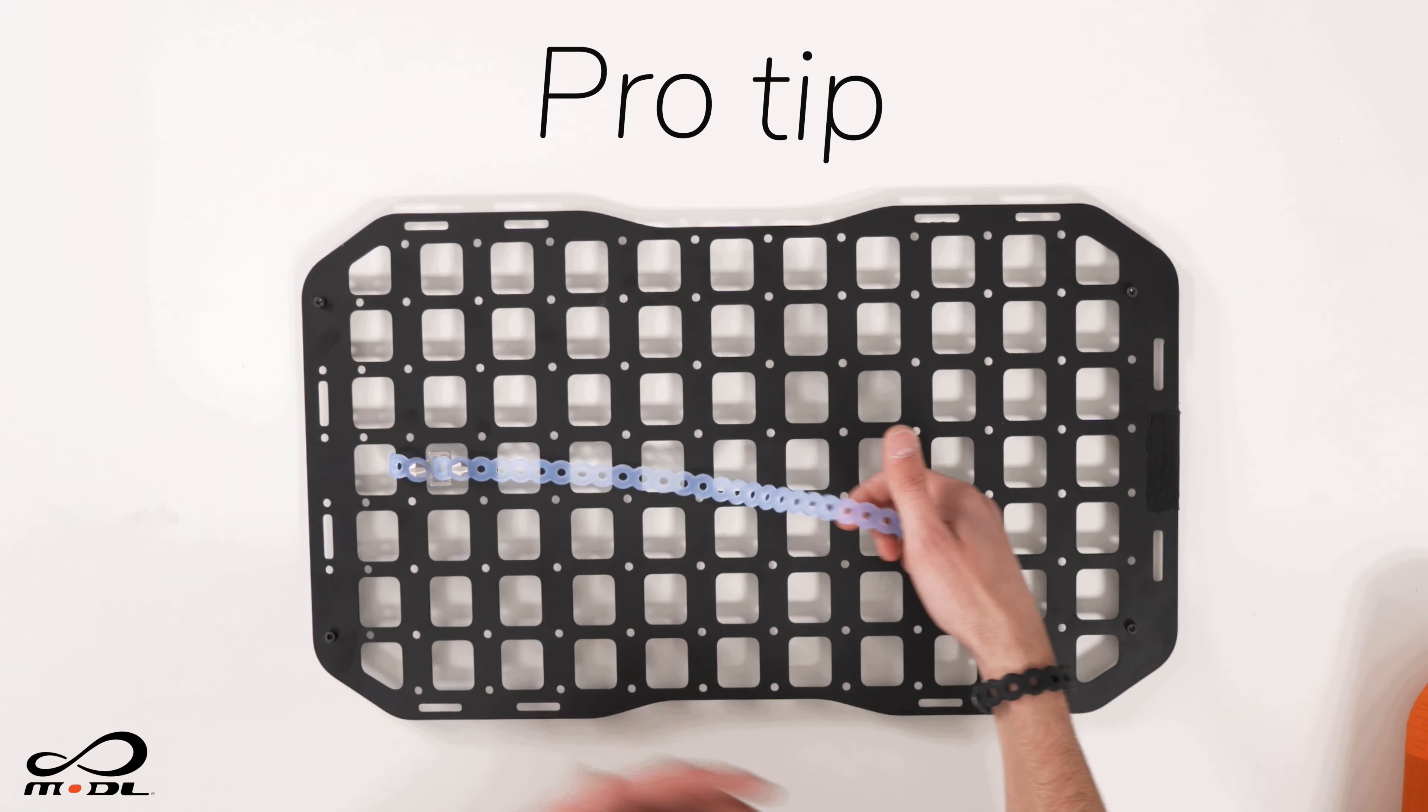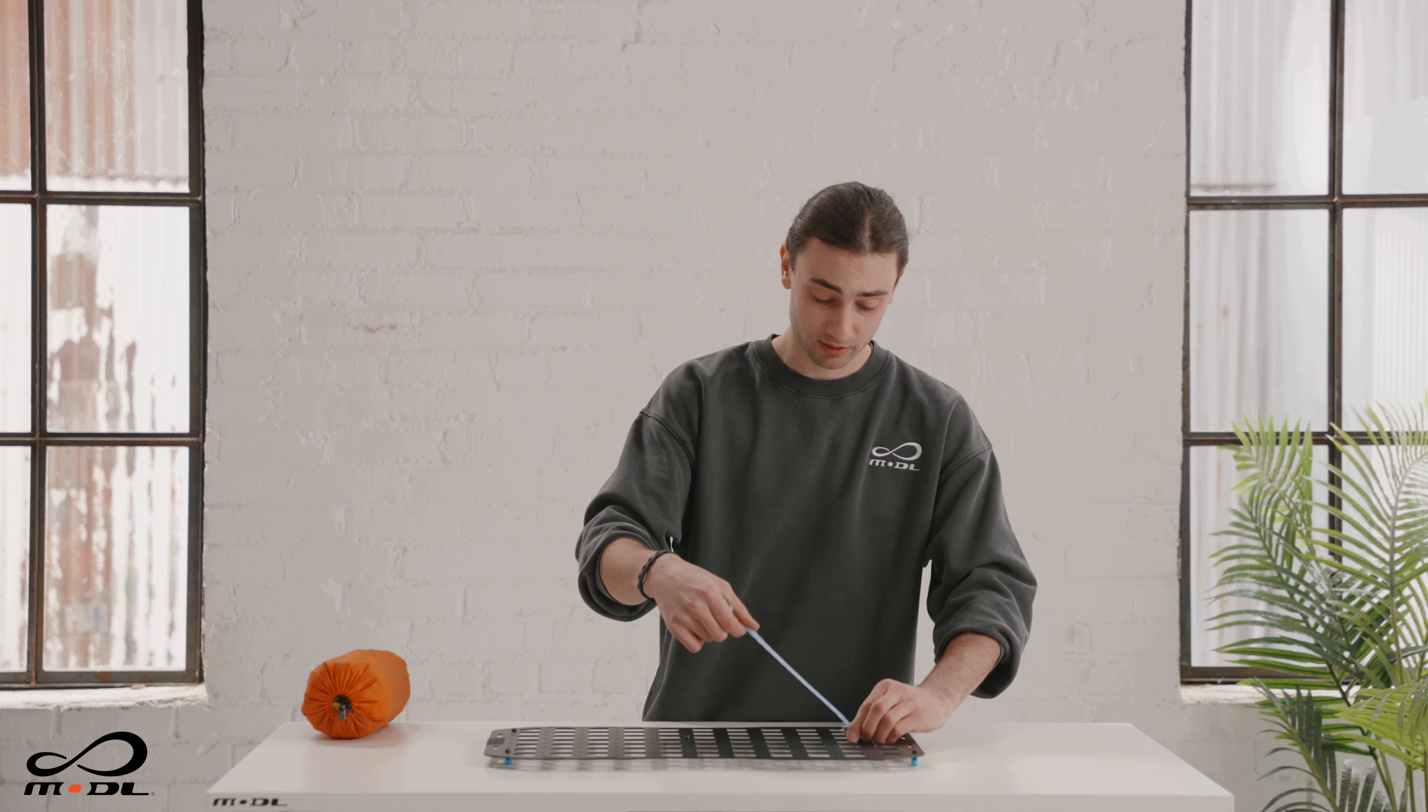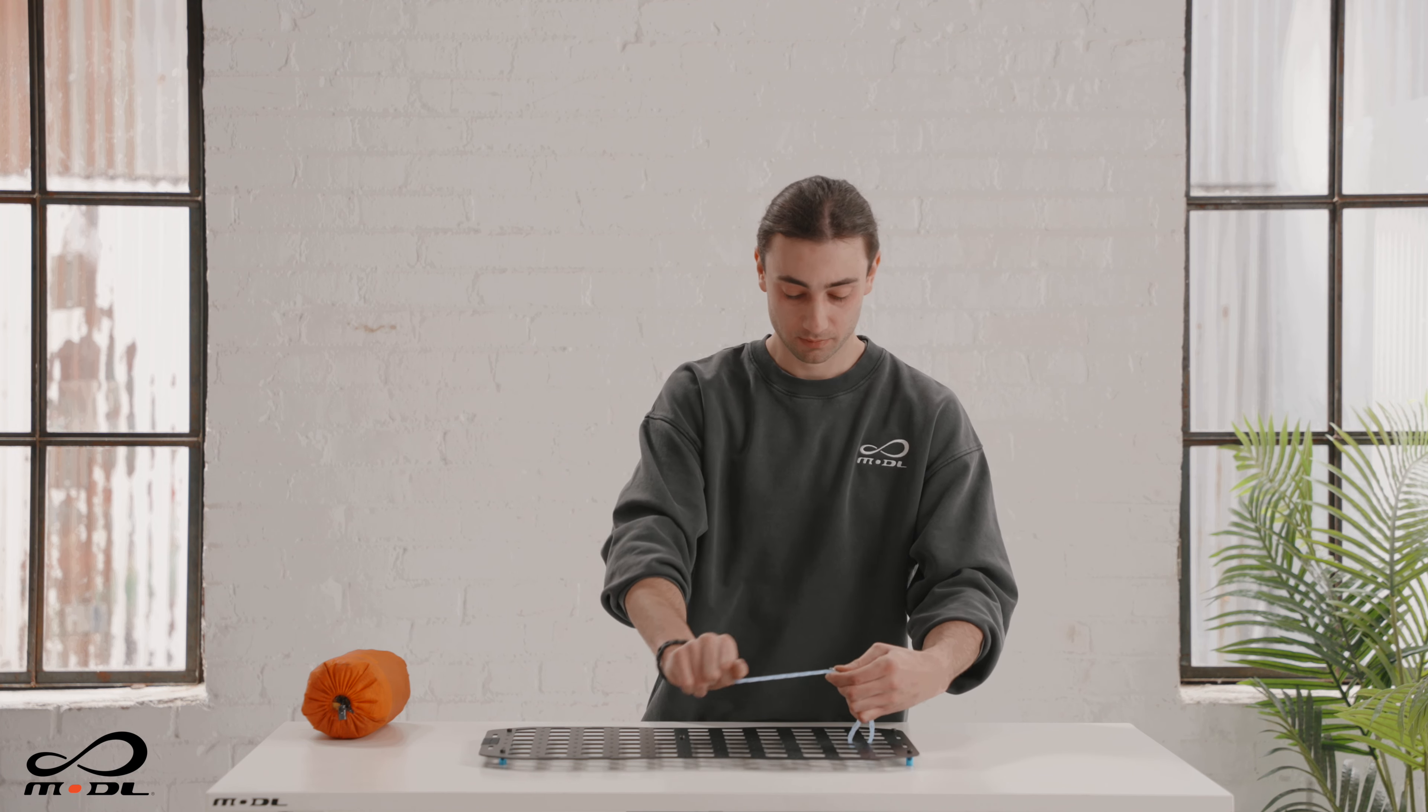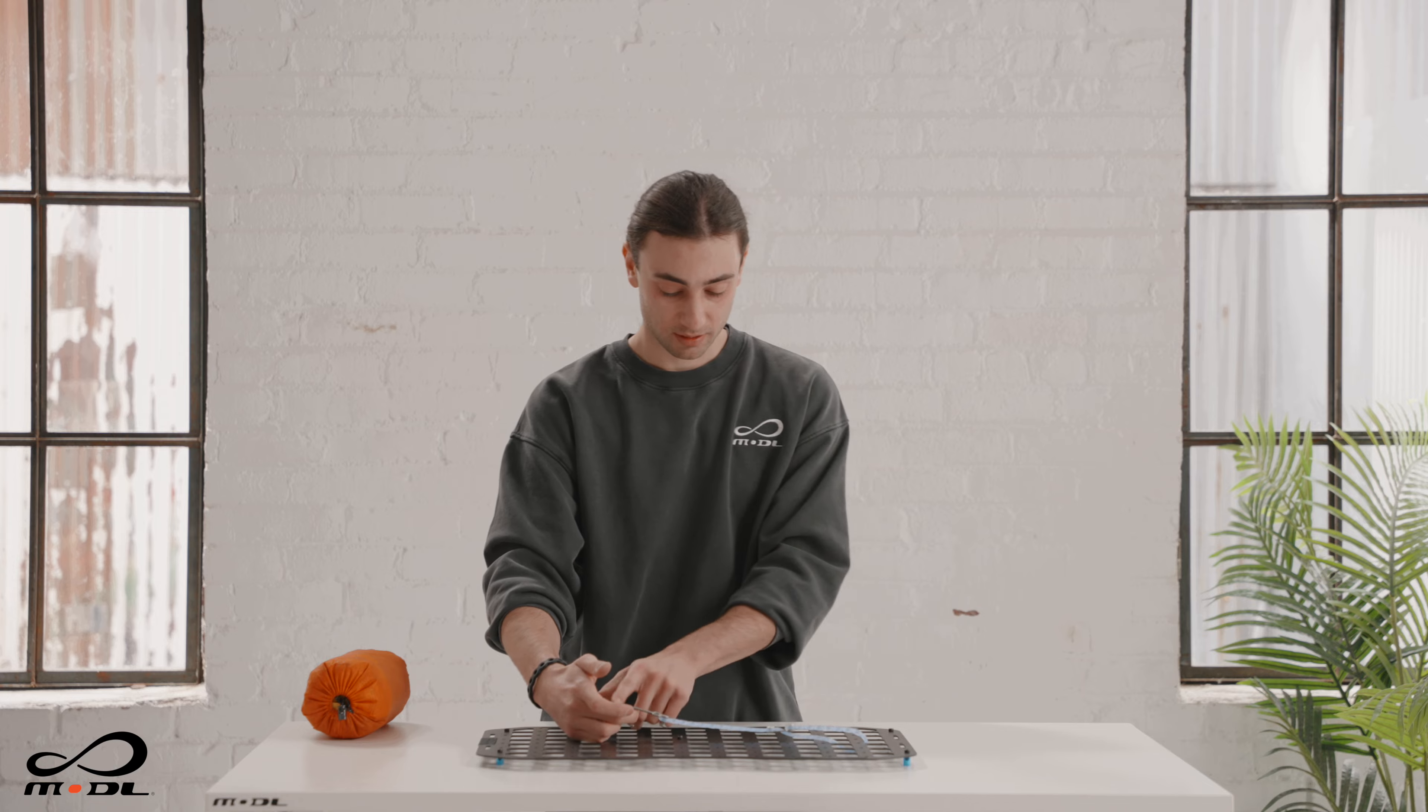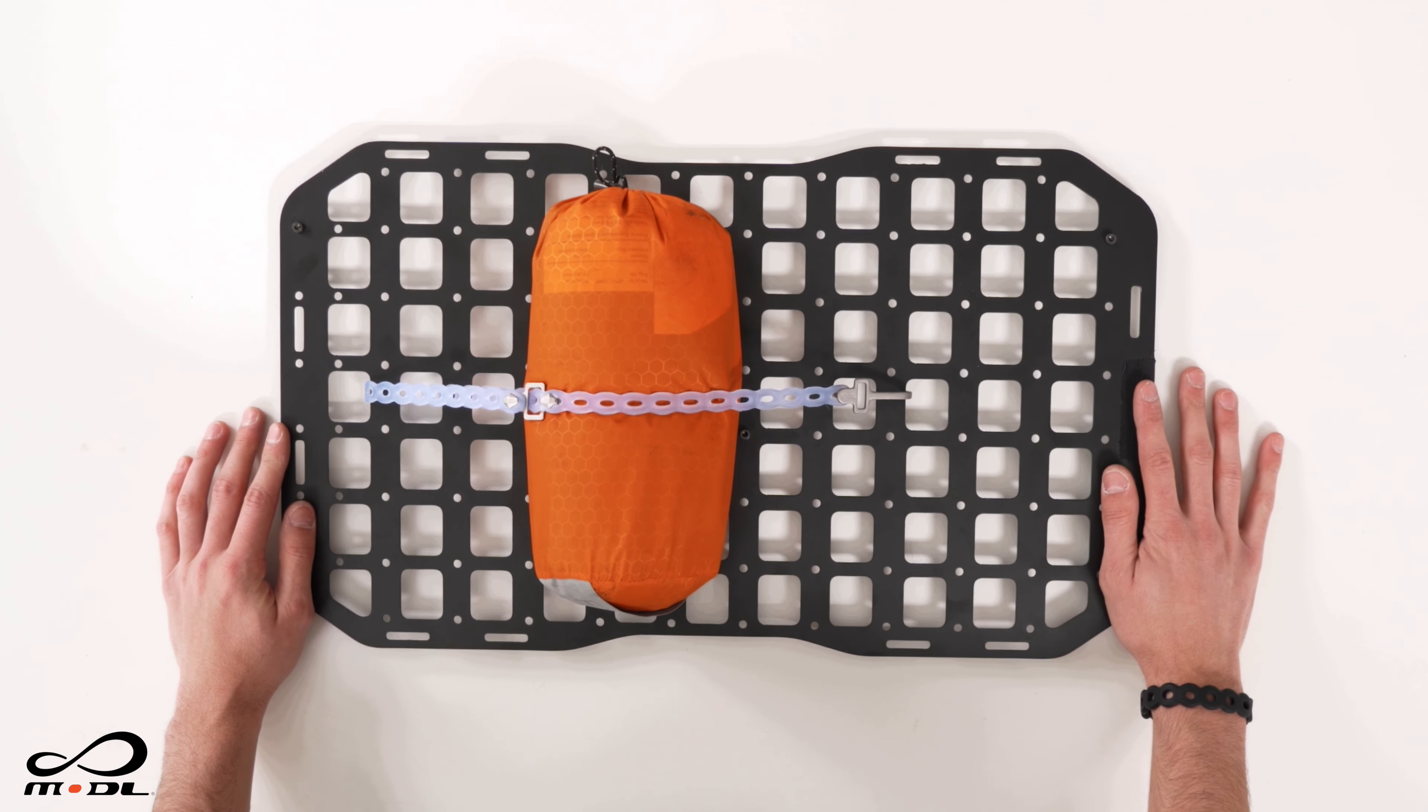Pro tip, if you want to easily adjust the length, what you can do is unhook where the mounted stud length is and then pull out like this and clip at a further length and that shortens the hook stud. So that means that when you clip, it's going to be a lot tighter.